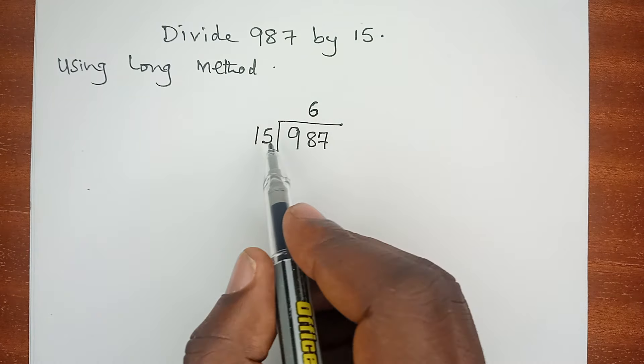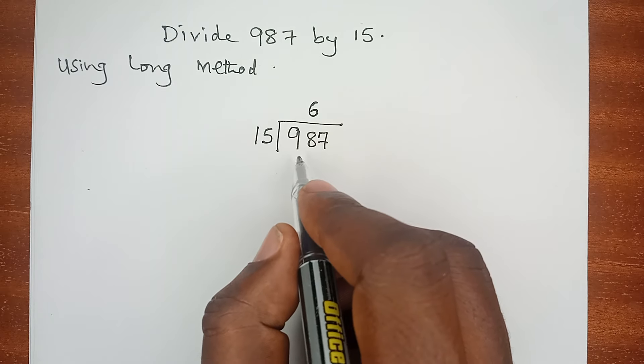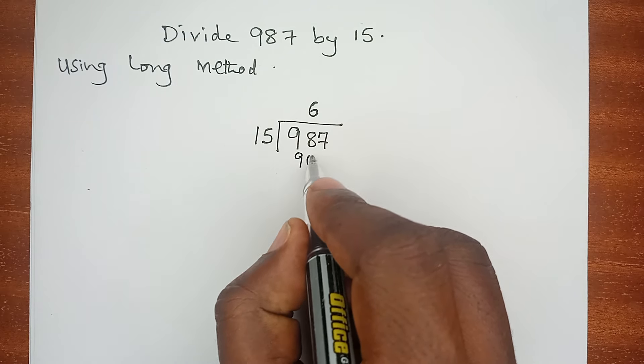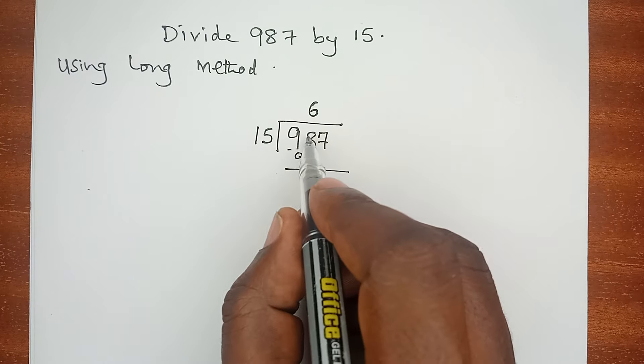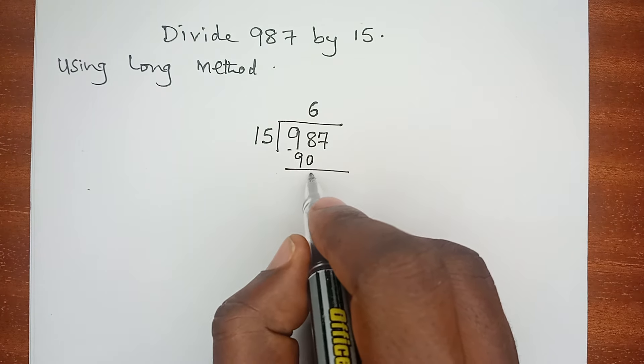6 times 15 is actually 90. We subtract and have 98 minus 90 is 8.